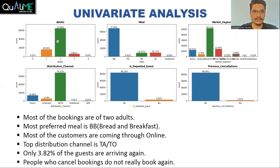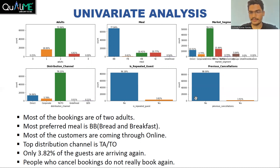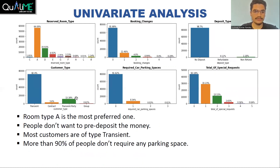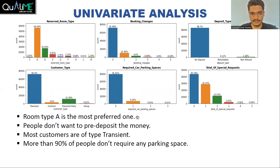Most bookings are for two adults. The most preferred meal is bed and breakfast. Most people come through online channels. The top distribution channel is TA/TO. Most guests are not repeated — approximately only 4% of people are actually repeat guests. Most people do not have any history of previous cancellation. Room type A is the most preferred room type. Most people do not make any changes to their booking, though some make one or two booking changes. Most people do not deposit any amount. Approximately 8% of people require at least one car parking space.